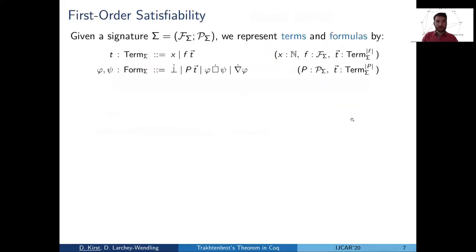So let's start getting formal. I want to introduce first order satisfiability, how we represent it in our type theoretical setting. I don't go much into detail. The only important thing is probably that terms and formulas are represented as inductive types dependent in a signature, which contains the function symbols and the predicate symbols.